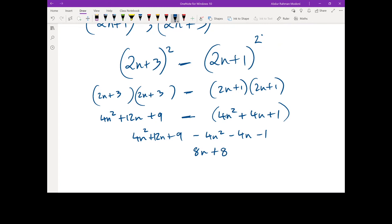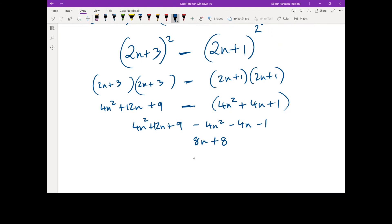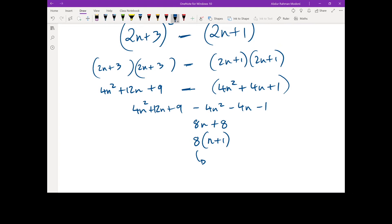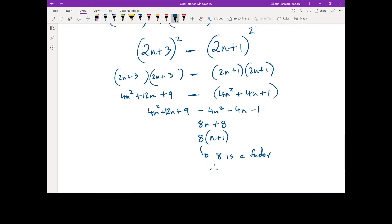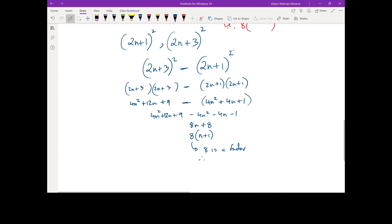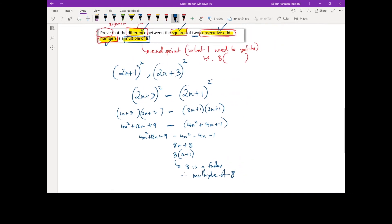We haven't proved it's a multiple of eight yet. What do I need to do? Take eight out as a factor. 8(n+1). Now we can say eight is a factor. Therefore, this is a multiple of eight. You need to make that conclusion statement. Eight is a factor, therefore, multiple of eight.